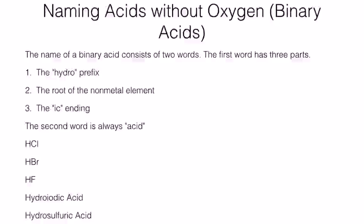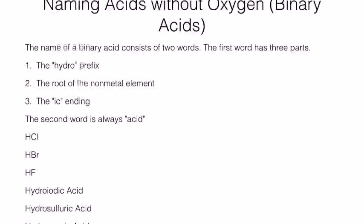The prefix hydro will go before any element that you write. The root of the non-metal will follow the prefix hydro, and then we will drop whatever the suffix is and add ic to the ending. The second word is obviously just going to be acid always. So these are pretty easy, they're straightforward.